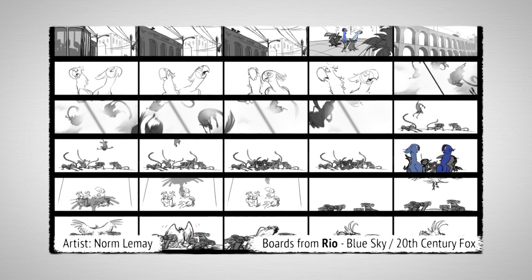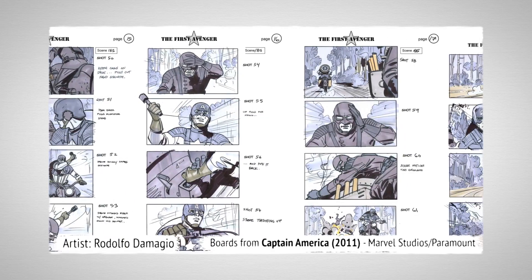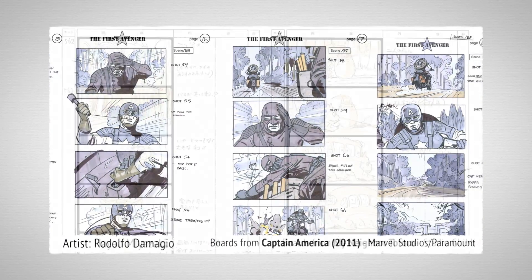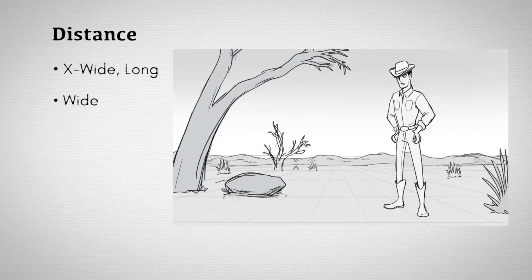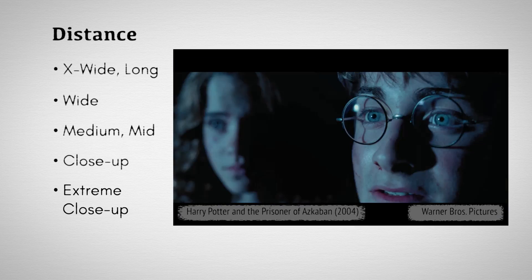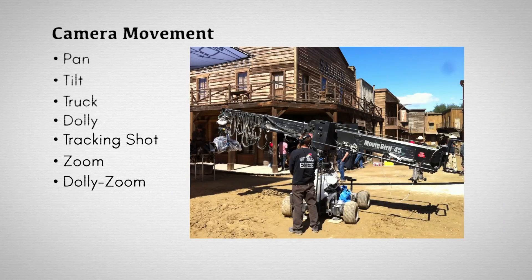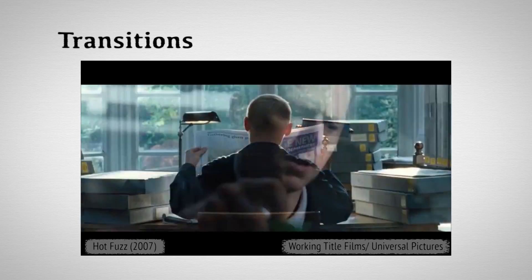We'll start by going over basic filmmaking terminology and concepts, understanding what a storyboard is used for, go over different shot types, camera moves, and transitions.